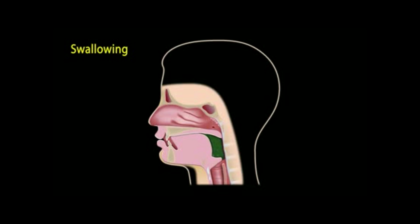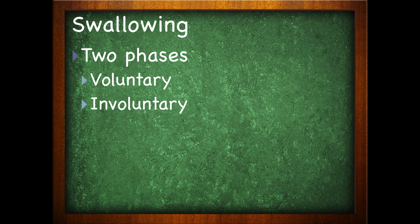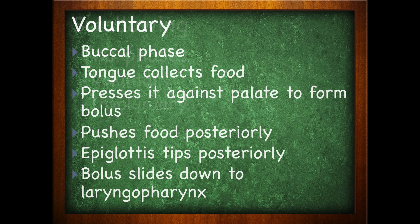Swallowing, also known as deglutition, has two phases: the voluntary phase and the involuntary phase. The voluntary phase is the buccal phase — the tongue collects the food, presses it against the palate to form a bolus, and pushes the food posteriorly towards the back of the throat. The epiglottis, that spoon-shaped piece of cartilage that keeps you from choking every time you swallow, tips posteriorly to block the windpipe opening. The bolus then slides down the laryngeal pharynx.